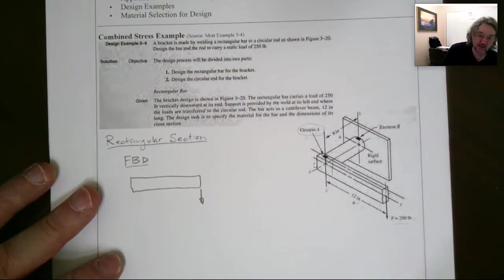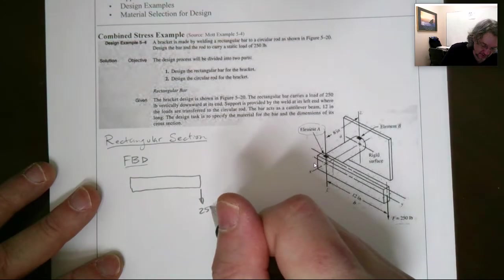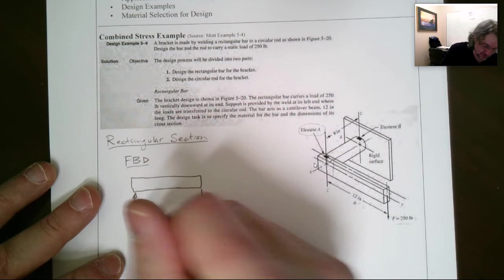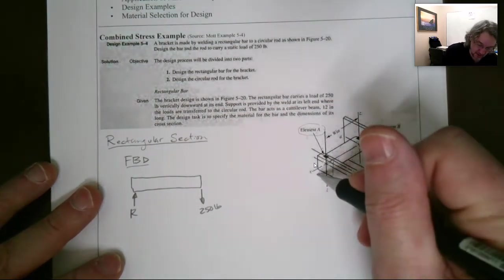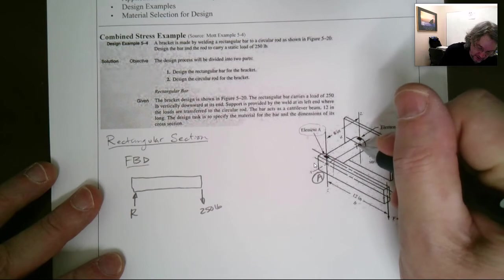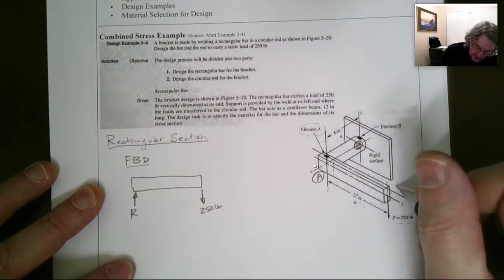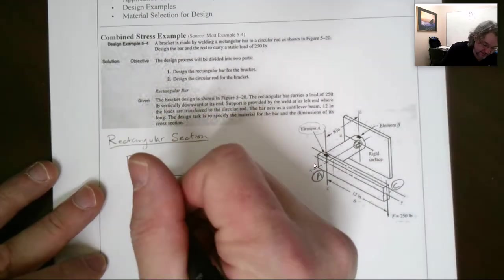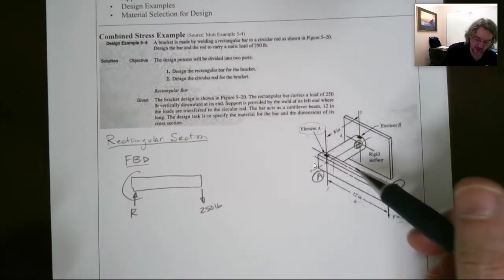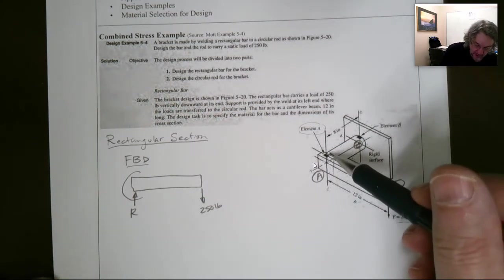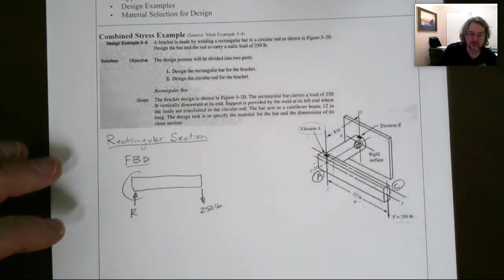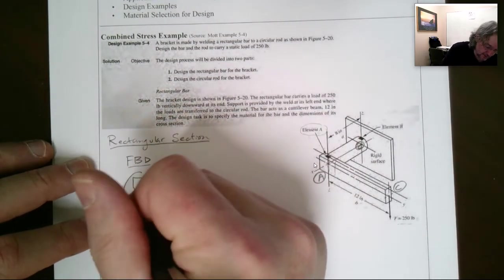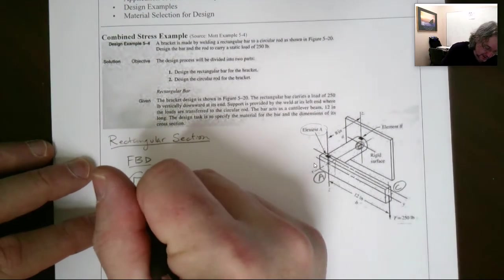And so we'll draw the thing out as if it is cantilevered out here. So we have this load coming down of 250 pounds. And so there's going to be a reaction right here. And I decided to call this A, that general location, this B, and this C right there.